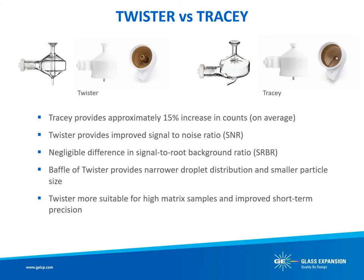The Twister cyclonic spray chamber features a central transfer tube, often referred to as a baffle or a double-pass cyclonic. This feature provides a smaller particle size and more narrow droplet distribution compared to our single-pass cyclonic, the Tracy. While the Tracy provides greater transport efficiency leading to greater sensitivity, greater sensitivity is not always the best solution. Smaller droplet sizes reduce matrix effects and improve short-term precision, making the Twister the most suitable choice for high-matrix samples, and the PTFE Twister most suitable for high-matrix samples containing hydrofluoric acid. The reduced sample load helps increase torch life, slow salt buildup at the injector tip, and decrease the frequency of cleaning ICP-MS interface cones.